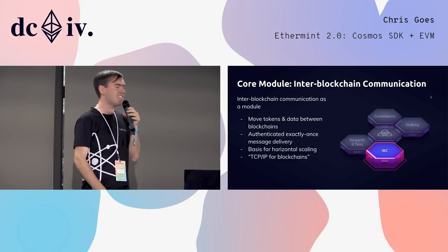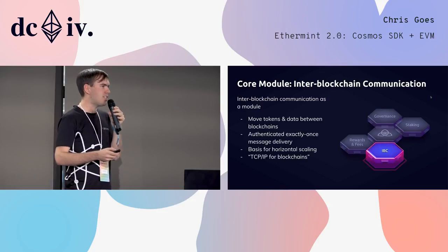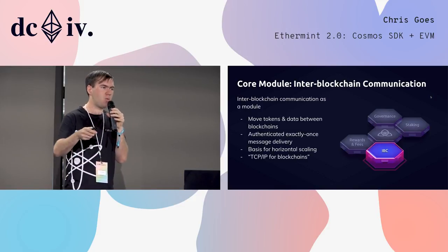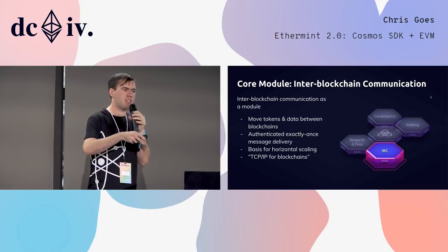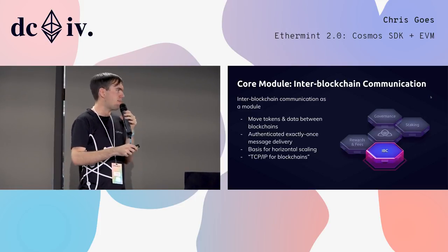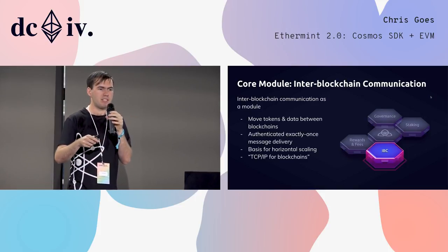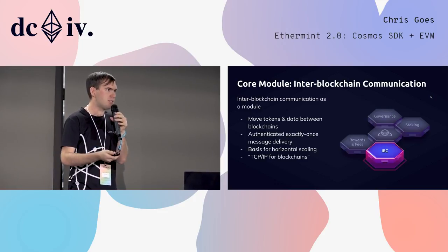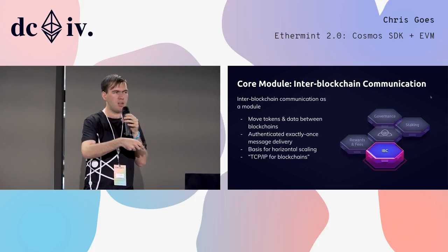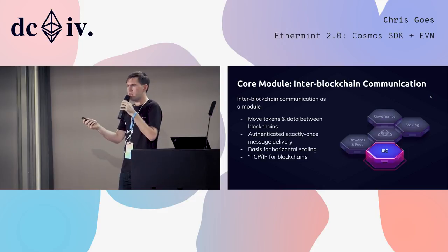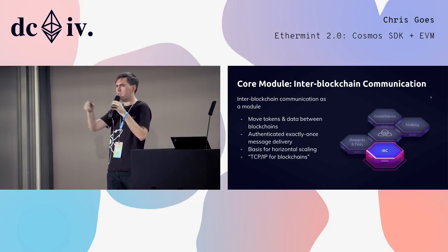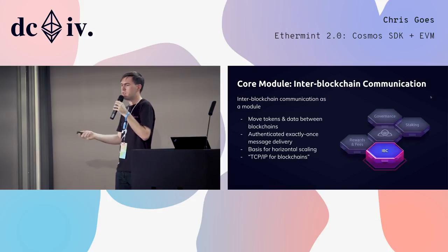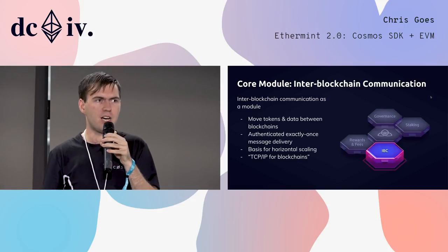The final core module, and my favorite, is inter-blockchain communication. This is the key part of what makes the Cosmos network model tick. We've exposed the IBC interface, which is a payload-agnostic way of sending authenticated messages exactly once to another blockchain. It's a little like TCP/IP for blockchains. On top of this authenticated exactly-once message delivery primitive, you can implement lots of different application-level guarantees: token transfer, conserving supply across two different blockchains; transfer of unique tokens, conserving the existence of a particular unique token on only one chain; data transfer; or even code transfer — parts of your smart contracts and some kind of sharding.